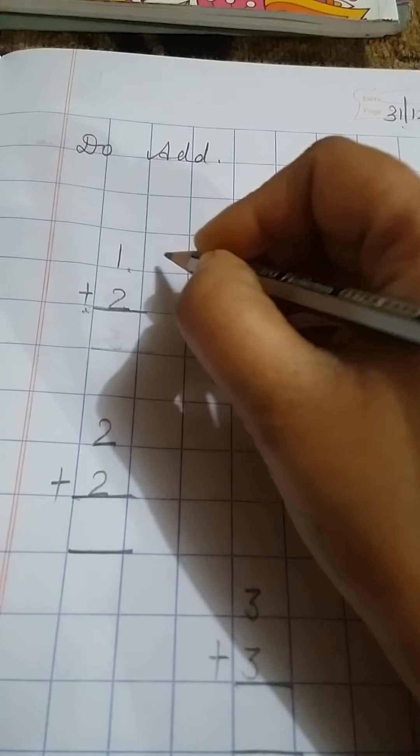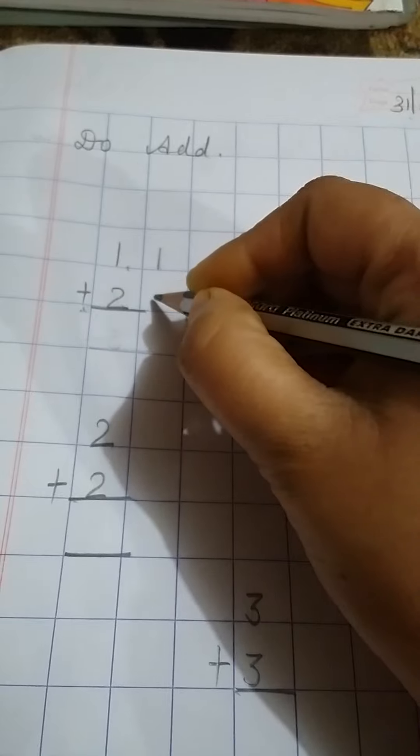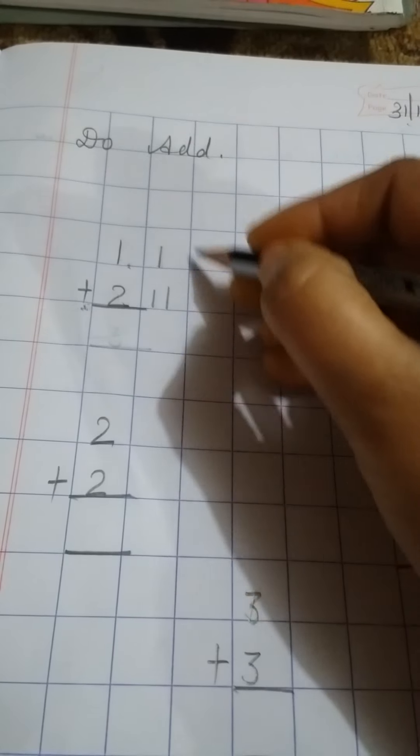This is one number and this is two number. So we will draw one line in front of one number, two lines in front of two number. Now we will count all these lines: 1, 2, 3. We will write here 3.